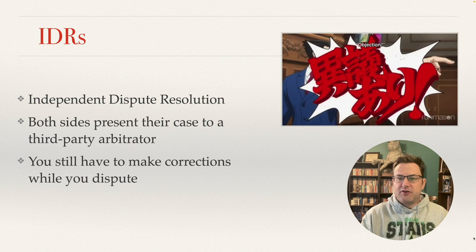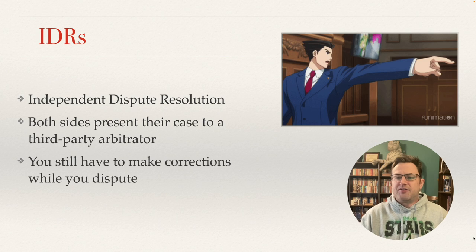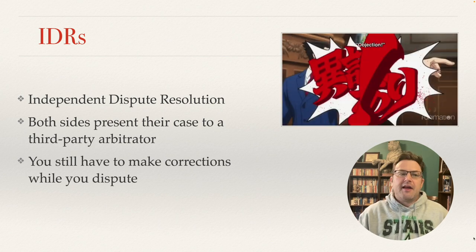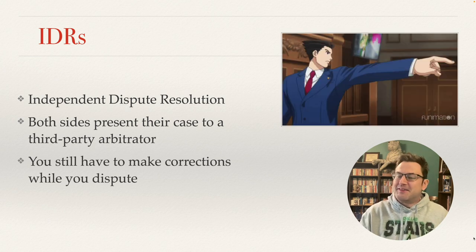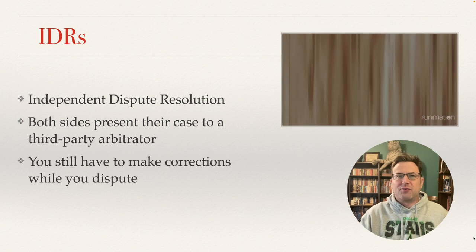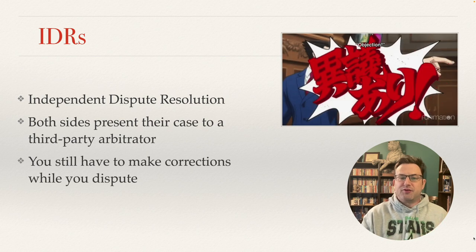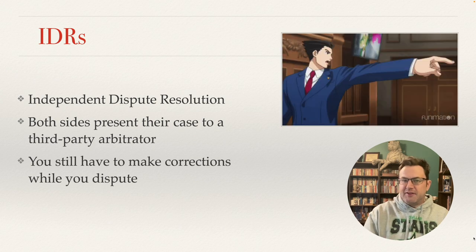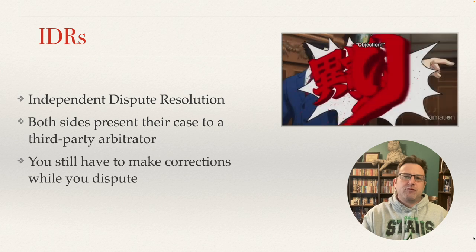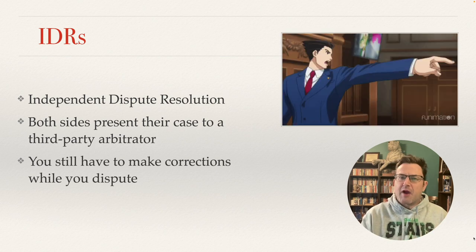IDRs — independent dispute resolution — are something else you might hear about and may be involved in. This is the challenge a facility can make to a state tag if the building feels it was wrongly accused. You do have to run the dispute at the same time you're doing the plan of corrections — you don't get to delay corrections while you appeal. Both sides present the case to a third-party arbitrator: the state submits its evidence and argument, the building submits its evidence and argument, and the arbitration board makes a resolution. I've been involved in disputes that went up to three rounds.